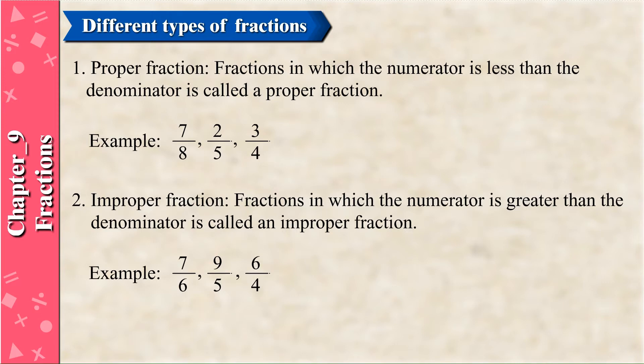Improper Fraction: Fractions in which the numerator is greater than the denominator are called improper fractions. Examples: 7/6, 9/5, 6/4.